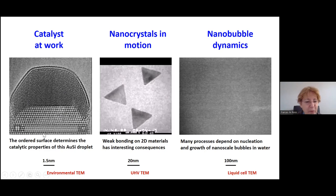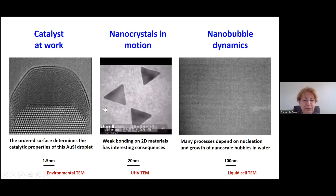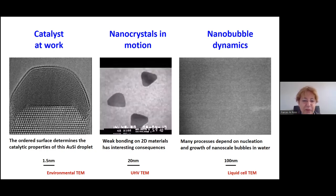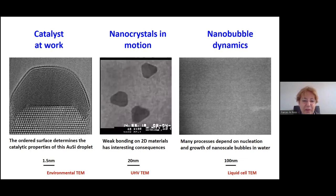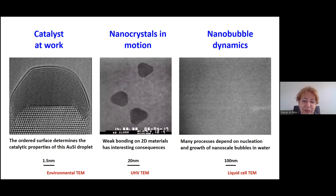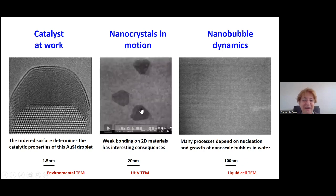The ordered surface determines the catalytic properties of this droplet. So here's an example where you need to observe things as they happen to understand what's going on. Here's a second example where we've grown gold triangles onto a graphene substrate. The weak van der Waals bonding of the graphene surface means that the gold islands are not very well attached — you can see them jiggling around. This kind of measurement allows us to say something about the strengths of the bonding between 3D materials like gold and 2D materials like graphene or other layered structures.